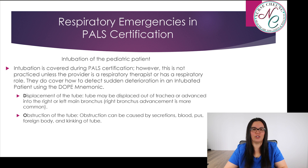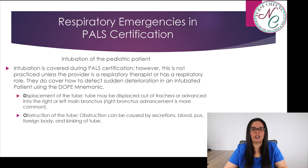Displacement: the tube may be displaced out of the trachea or advanced into the right or left main bronchus — right bronchus advancement is more common. Obstruction of the tube can be caused by secretions, blood, pus, foreign bodies, or kinking of the tube.